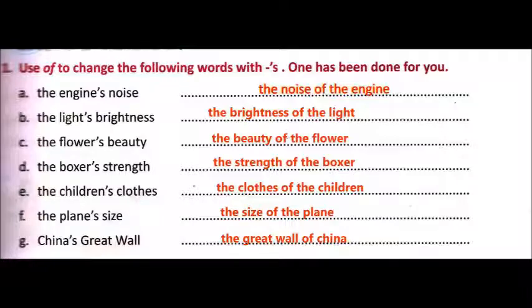Then 'the light's brightness' — whose brightness? The light's brightness. Its two forms are: first with apostrophe S (already given in the book), and second you write 'the brightness of the light'. Then 'the flower's beauty' — using 'of', you write 'the beauty of the flower'. Then 'the boxer's strength' — 'the strength of the boxer'. Then 'the children's clothes' — 'the clothes of the children'. Then 'the plane's size' — 'the size of the plane'. Then 'China's great wall' — 'the great wall of China'.